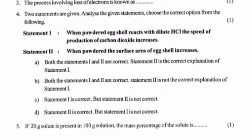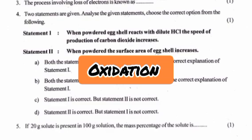Question 3: The process involving loss of electrons is known as? Answer: Oxidation.